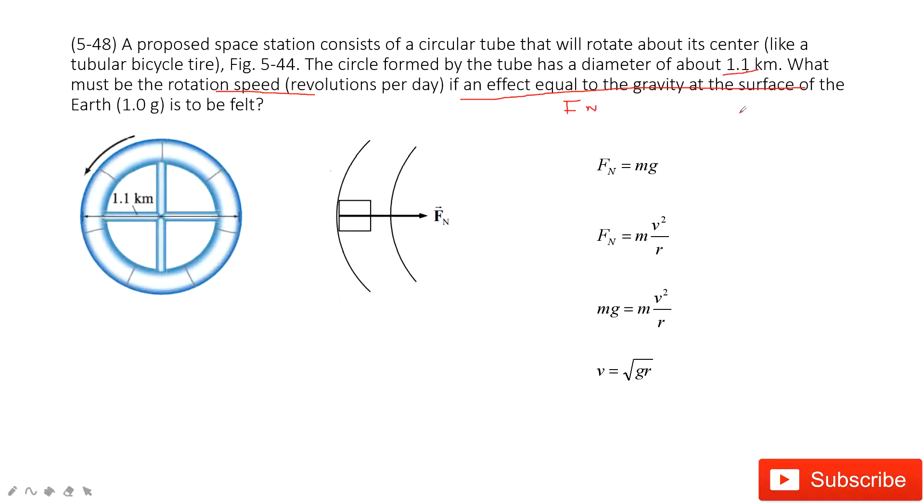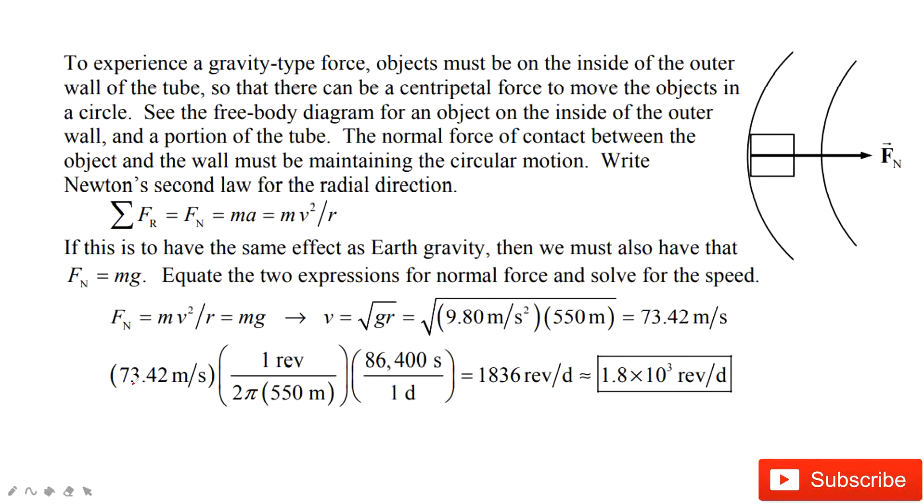Then look at there, the r is given, g is 9.8 meters per second squared. So very easily we can get this velocity, 73.42 meters per second.